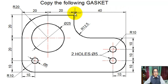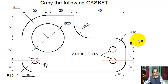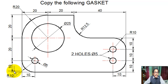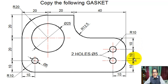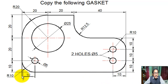In this figure, the dimensions are: 40, 20, and 20 horizontally. Vertically, this is 20, this is 20, and this is 10. Also, these segments are 10, 10, 10, and 10.